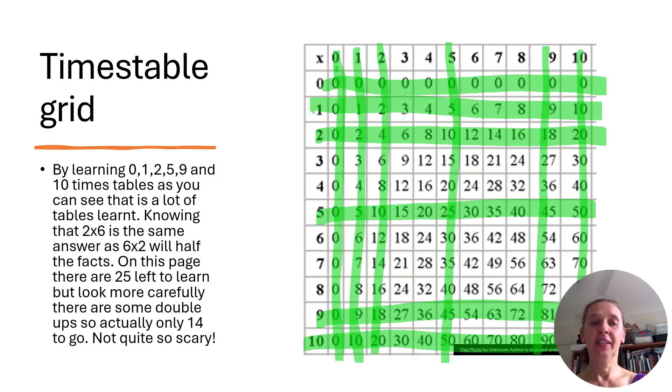So let's look. If we look at a times table grid, if you know your zero, one, two, five, nine, and ten times tables, which are all the easier ones, really, you actually only have a few that you have to learn by rote. And if you know that six times two is the same answer as two times six, that also then halves how many you had to learn in the first place. So instead of around 120, you're down to around 60. When you've got all of these in place, you're down to around 14, which is much, much more achievable for students.